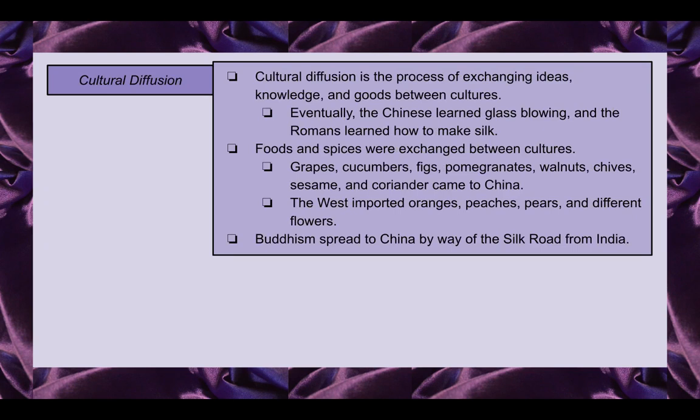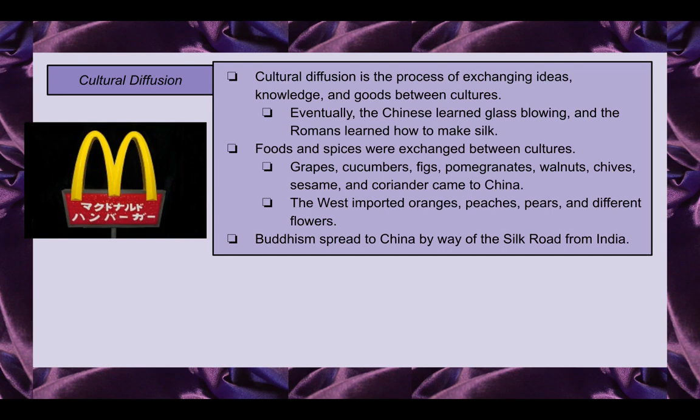Lastly, we have cultural diffusion — the process of exchanging ideas, knowledge, and goods between cultures. For example, today you see McDonald's in Asian countries; that's a form of cultural diffusion. Eventually the Chinese learned glassblowing and the Romans learned how to make silk, so it was no longer necessary to trade those goods. Foods and spices were also exchanged: grapes, cucumbers, figs, pomegranates, walnuts, chives, sesame, and coriander came to China from the West.